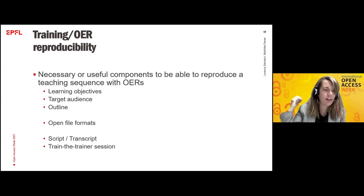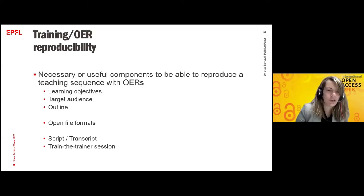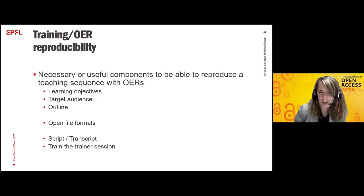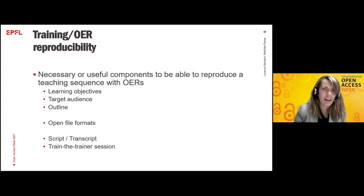It's what will determine if you go deeper and find more information. Then open file formats — it's useful to know if you'll be able to readapt the course. The last element is if there is a script or transcript of sessions completing the slides, so you also have what was said by the trainers. And in some rare cases, there are train-the-trainer sessions organized so other people can learn how to give the lesson. The first four elements are the most common, while the last two are more ideal.